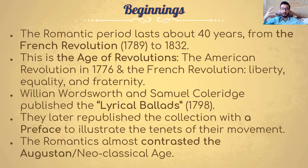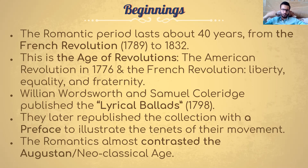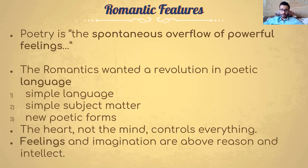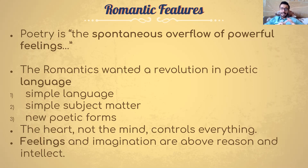We discussed how they contrasted the Augustan age. When they bring something from the past into their poetry, they don't go back to the Augustan age — they are against it — nor usually to the Renaissance. They go back even further, to the medieval ages, because people back then were more interested in nature and the innocence of nature, unlike the Augustan age with its focus on didactic literature — teaching and pleasing. Poetry for them is the spontaneous overflow of powerful emotions or feelings.